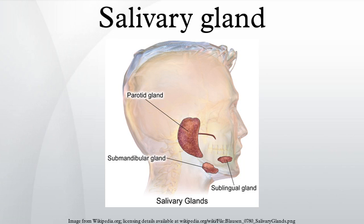Submandibular glands: The submandibular glands are a pair of major salivary glands located beneath the lower jaws, superior to the digastric muscles. The secretion produced is a mixture of both serous fluid and mucus, and enters the oral cavity via the submandibular duct or Wharton duct. Approximately 70% of saliva in the oral cavity is produced by the submandibular glands, even though they are much smaller than the parotid glands.